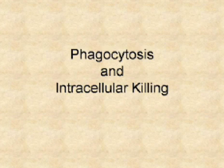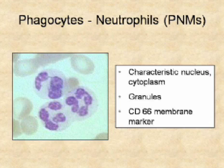Let's look at phagocytosis and intracellular killing. PMNs have their characteristic multi-lobed nucleus and can be recognized morphologically. They have a number of different granules. There are also surface antigens used to identify cells — CD markers. Neutrophils are identified by the marker CD66.